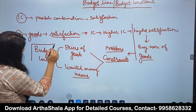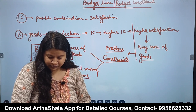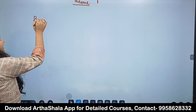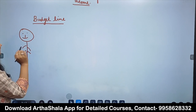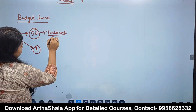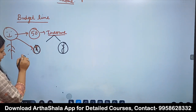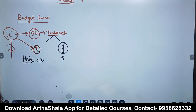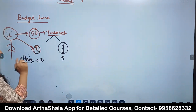So what do you understand by what budget line means? Let us do this in detail. For example, a consumer has 50 rupees income, and this income is to be distributed across two goods — one X and one Y. X costs 10 rupees per unit and Y costs 5 rupees per unit.